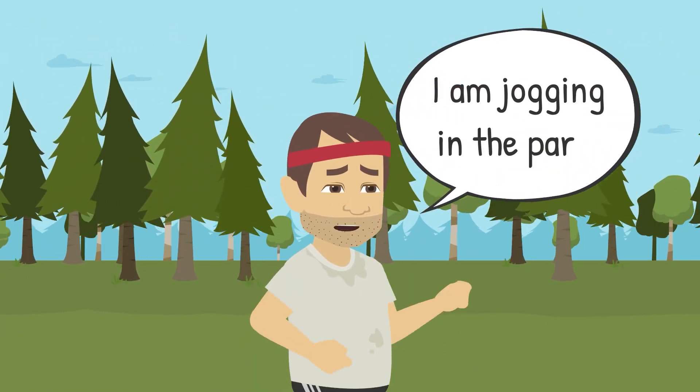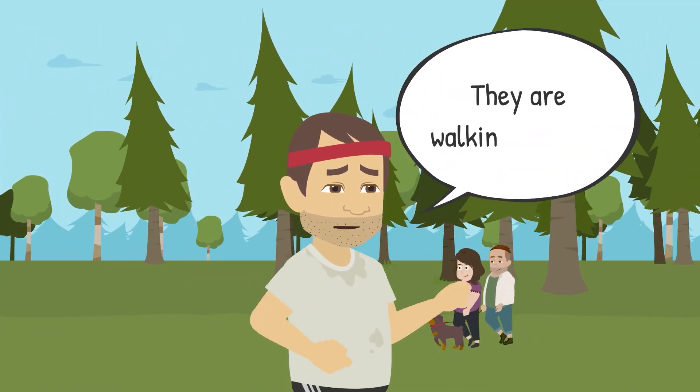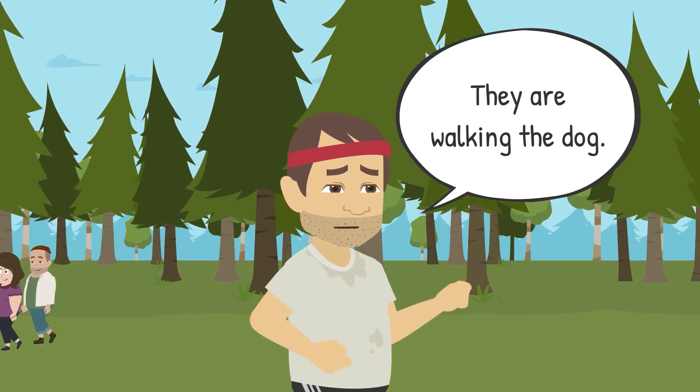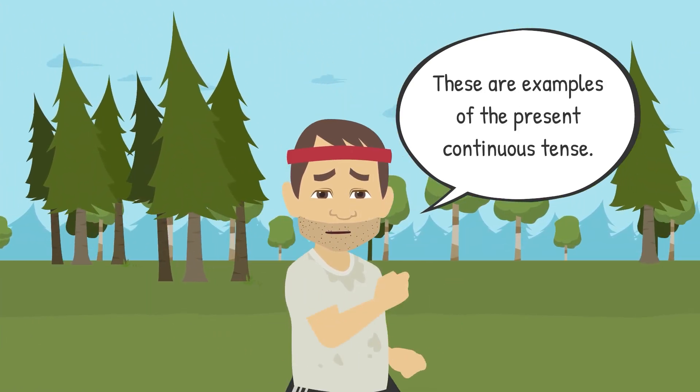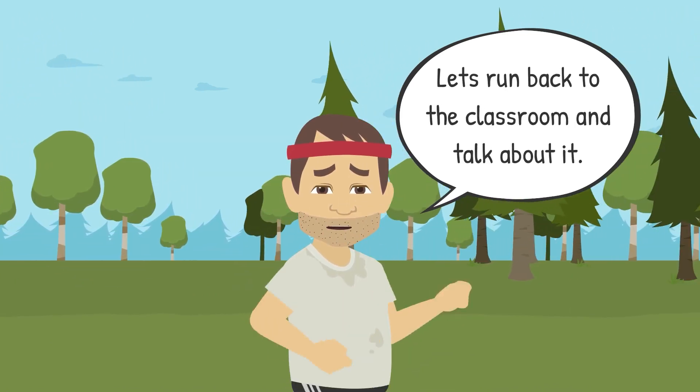I am jogging in the park. They are walking the dog. These are examples of the present continuous tense. Let's run back to the classroom and talk about it.